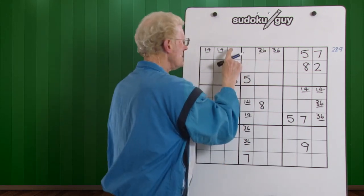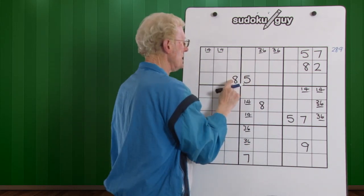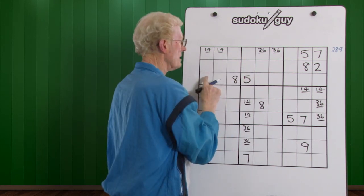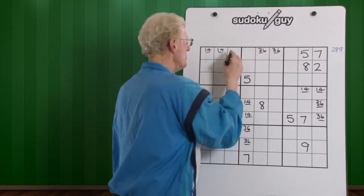Well, we know, take this one. We cannot put an eight there, because we've got an eight in this block. So it has to be a two, nine.